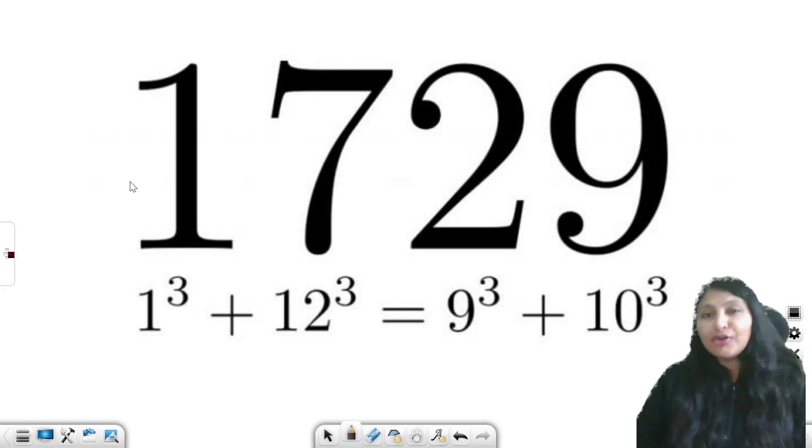So because of this amazing property of 1729 number, this particular number is known as the taxi number. Why? Because of this story. Also this number is known as Hardy-Ramanujan number, that is HR number.